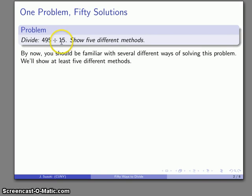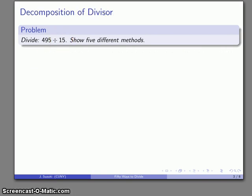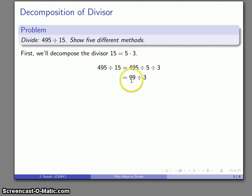So we know many different ways of solving this problem, so let's be a little bit creative here. And one thing we might start off with, 15, is a number that we can factor. We can decompose it into two different numbers. So the divisor 15 is 5 times 3. So that means if I want to do the division 495 divided by 15, I could divide by 5 and then divide by 3. So 495 divided by 5, that's 99, divide by 3 is 33.